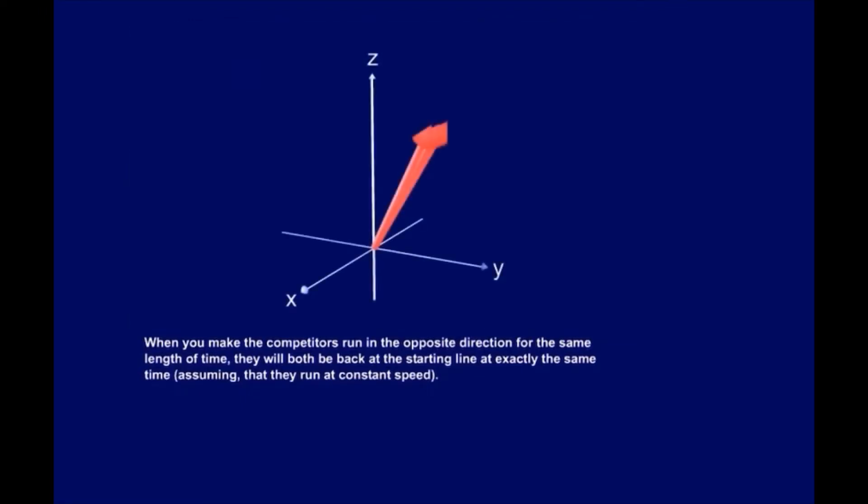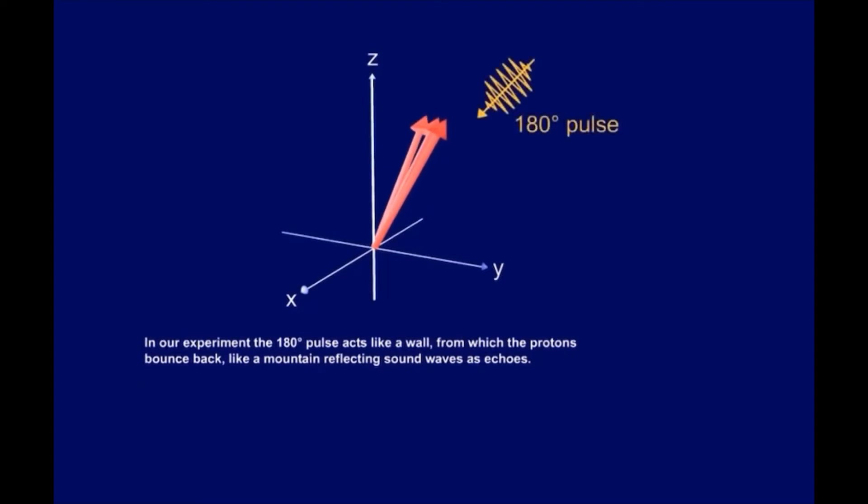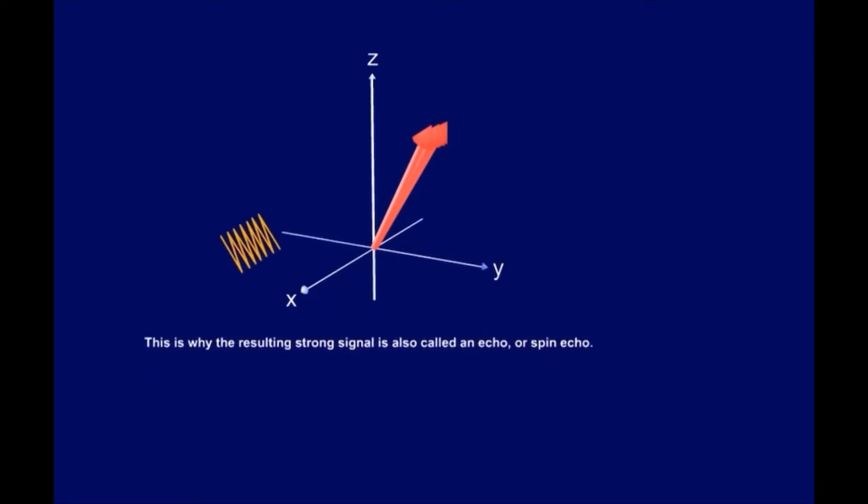In our experiment, the 180-degree pulse acts like a wall, from which the protons bounce back. This is why the resulting strong signal is also called an echo, or spin-echo.